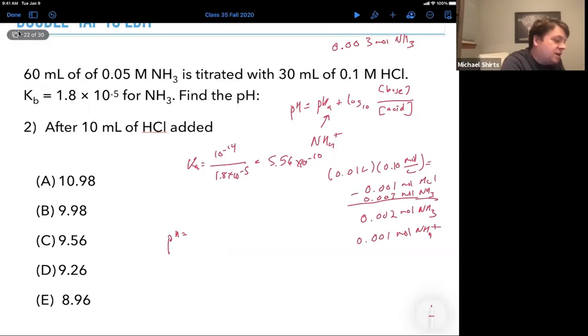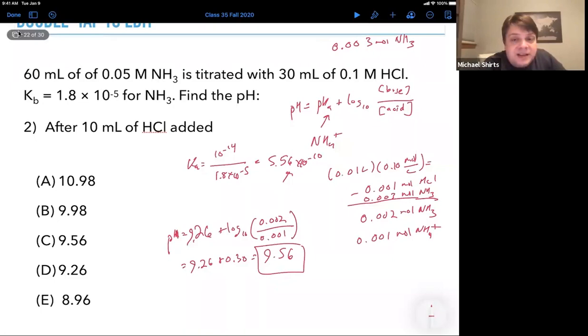We can plug into Henderson-Hasselbalch. pH equals the pKa, which is 9.26, plus log of base over acid: 0.002 over 0.001. Those are the total moles, but it's in the same volume, so the ratio of concentrations is the same as the ratio of total amounts. We've got 9.26 + 0.30 = 9.56. It's a little bit more basic than the pKa, which makes sense because we're not going to reach the pKa until we've added just enough for everything to be balanced out.